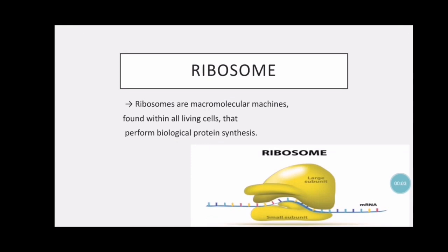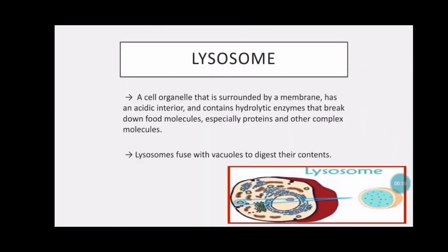Ribosome. Ribosomes are macromolecular machines found within all living cells that perform biological protein synthesis. Lysosome. A lysosome is a cell organelle that is surrounded by a membrane, has an acidic interior, and contains hydrolytic enzymes that break down food molecules, especially proteins and other complex molecules. Lysosomes fuse with vacuoles to digest their contents.